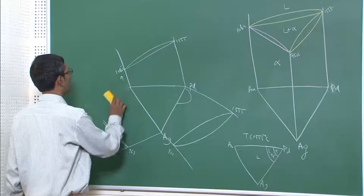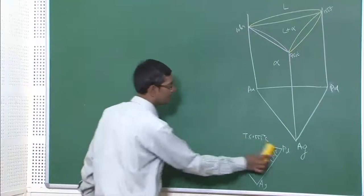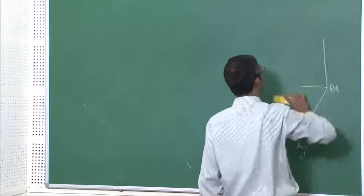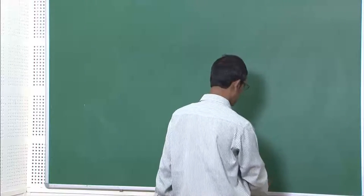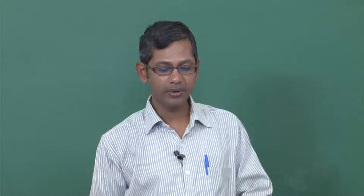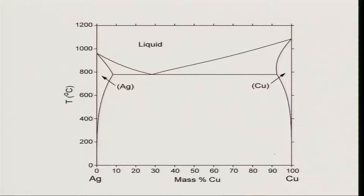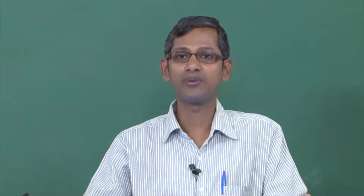Now let me move to the next case: three-phase equilibrium. For three-phase equilibrium I will first show the binary phase diagrams, then generate the ternary phase diagram. The case I am going to discuss is silver, copper, and gold. Silver and copper form a classical eutectic phase diagram — both are FCC but they form a eutectic instead of an isomorphous system because their atomic size differences are large, violating the Hume-Rothery rule.